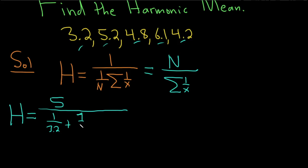This would be 1 over 5.2 plus 1 over 4.8. Wow, pretty messy. Plus 1 over 6.1 plus 1 over 4.2. So 1 over each of these numbers goes on the bottom.